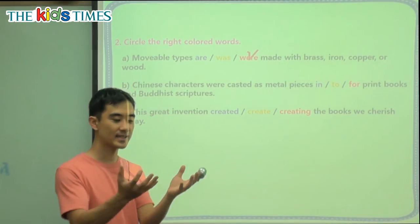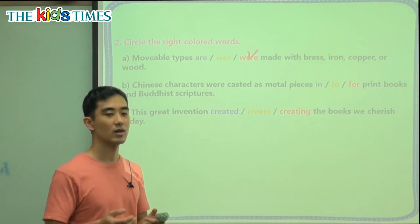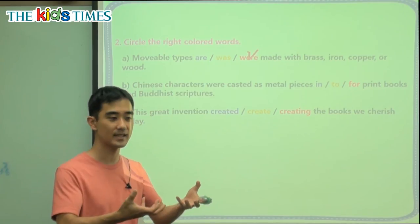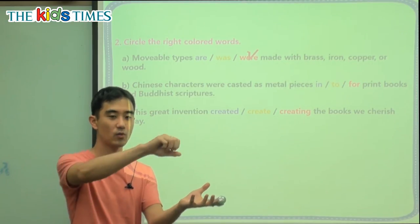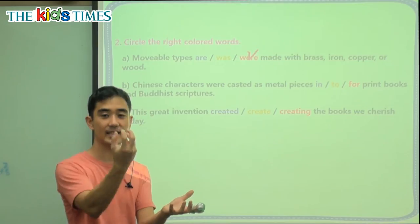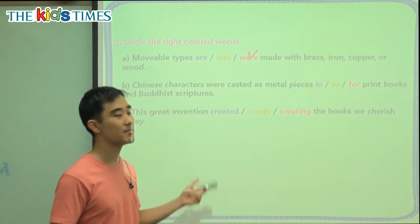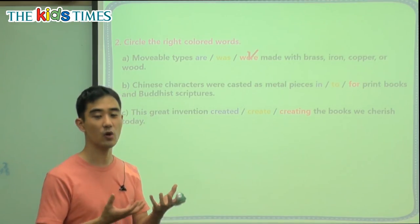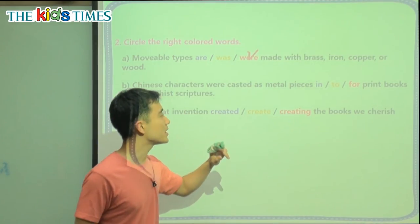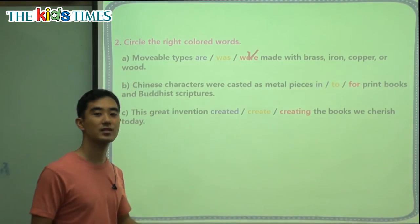Chinese characters were casted. Casted is when we have a shape — for example, when you make ice you have a little plastic mold. You put water in, it freezes, and you take the ice out. This is an ice cast. Here it's a letter cast — we don't make ice, we make letters. As metal pieces, blank, to print books and Buddhist scriptures.